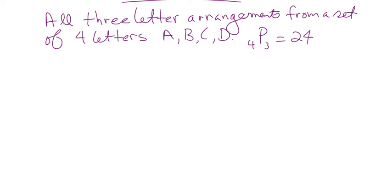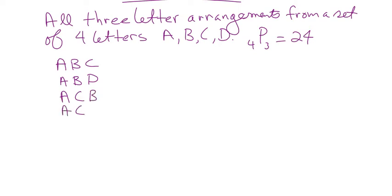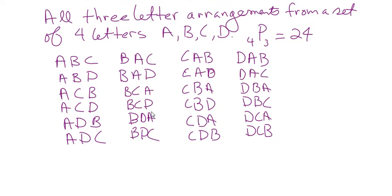Let's write those out alphabetically. We have ones starting with A: ABC, ABD, ACB, ACD, ADB, ADC. That's all the A's. And there are all 24 arrangements total.